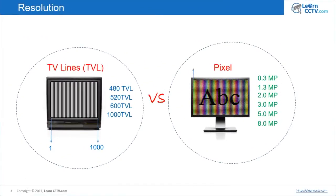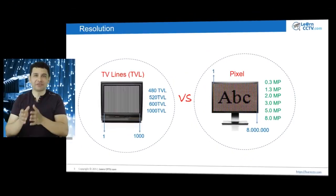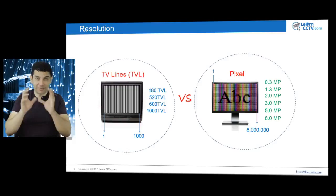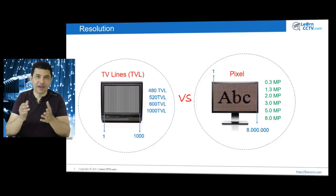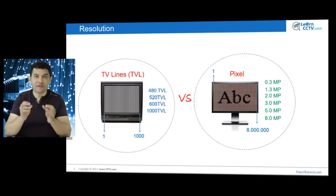Here you have one pixel and the last pixel — 8 million pixels, for example — means you have 8 megapixels. 8 million pixels in your image means 8 megapixels. If you have 2 million pixels in your image, you have 2 megapixels.